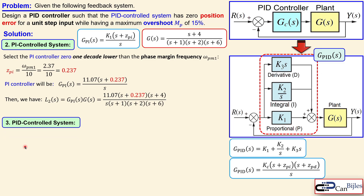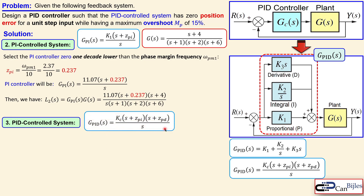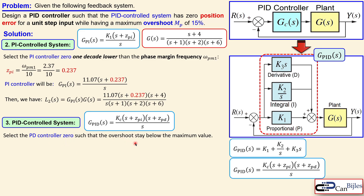The next step is the PID control system. We already have the PI part; now we add the derivative part, which introduces another zero ZPD. The full PID expression contains KC, ZPI, and ZPD, where KC equals K1 = 11.07. The PD controller zero must be selected such that the overshoot stays below the 15 percent maximum — that is mandatory.